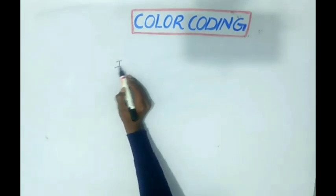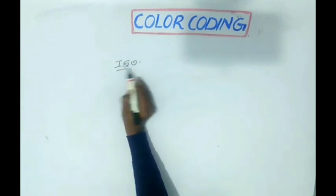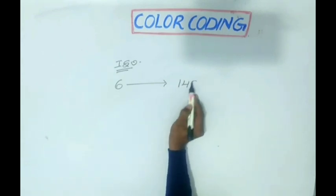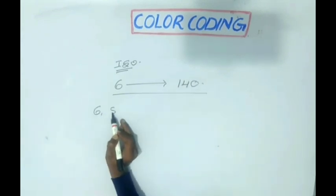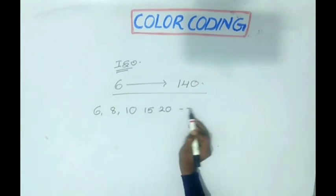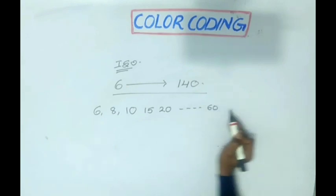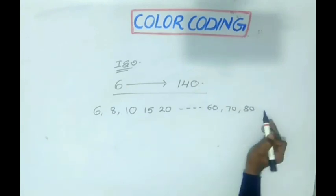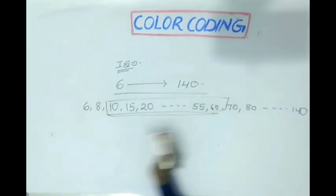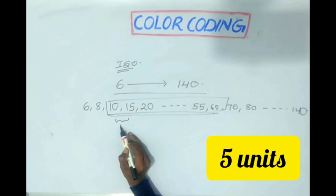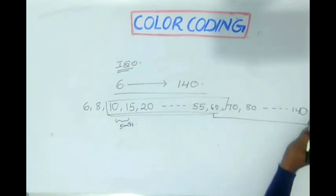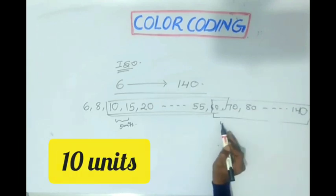According to the ISO standardization, endodontic instruments are ranging from 6 to 140 — that means 6, 8, 10, 15, 20, and so on to 60, 70, 80, and so on to 140. If you observe, from 10 to 60, the number advances by 5 units, whereas from 60 to 140, the number advances by 10 units.